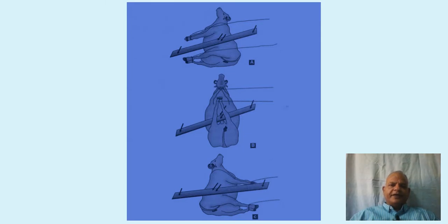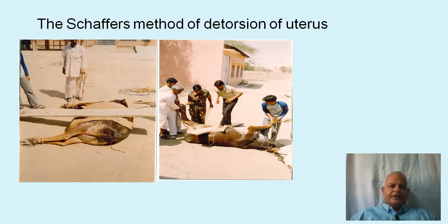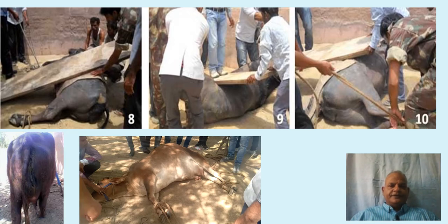In Schaeffer's method, the animal is placed in lateral recumbency and a wooden plank is placed as shown in the picture of the buffalo. The animal is then rolled slowly while pressure is applied on the plank, so that the uterus does not rise along with the animal's body, thereby correcting the torsion. These pictures show the correction of uterine torsion in a buffalo using Schaeffer's method.